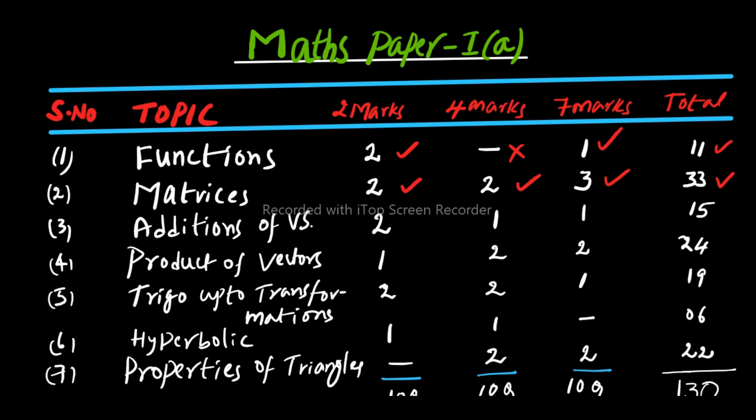For Additions of Vectors you need to practice carefully to gain the 15 marks. For Product of Vectors: 1 two-mark, 2 four-mark, and 2 seven-mark questions, totalling 24 marks weightage. Vector algebra is a very very interesting and important branch. By looking at this chart you can understand the weightage chapter-wise, marks-wise, and total marks. Some topics have 4 marks and 7 marks but no 2 marks; others have all three categories.